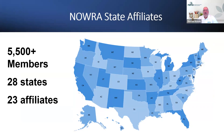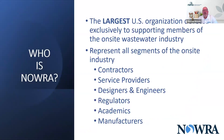NAWRA is a national organization. We have about 5,500 members representing 28 states across the country and 23 affiliates. We have a New England chapter which covers the six New England states. Those members are made up of all different sectors of the industry. NAWRA prides itself on being the largest organization in the country that supports the on-site wastewater industry. We also have interest from our Canadian friends as well as some other countries, but right now all our affiliates are in the U.S.